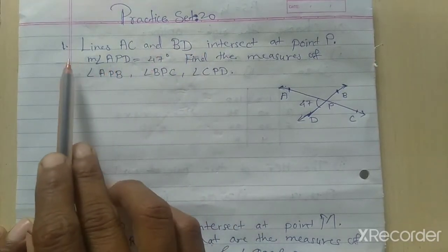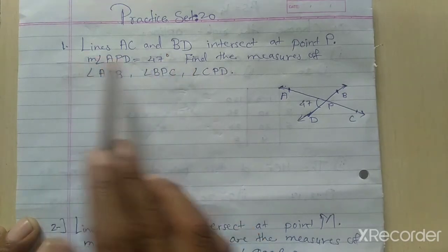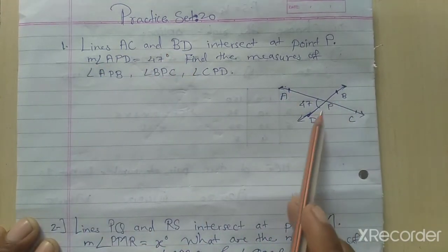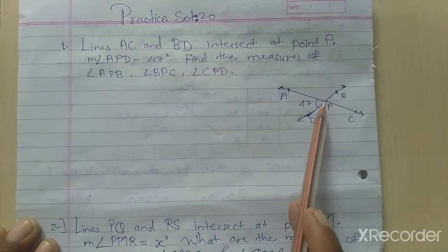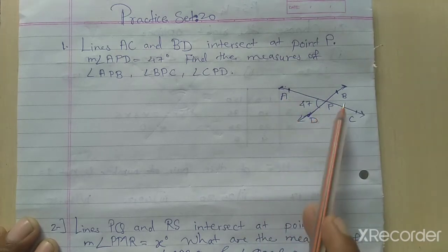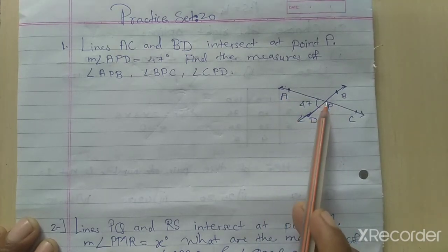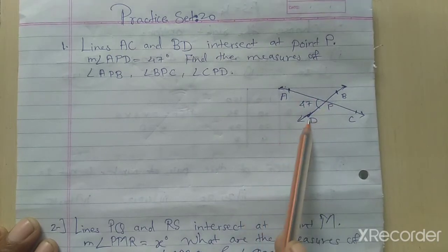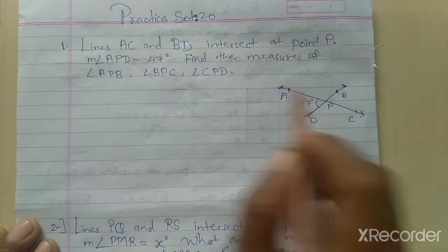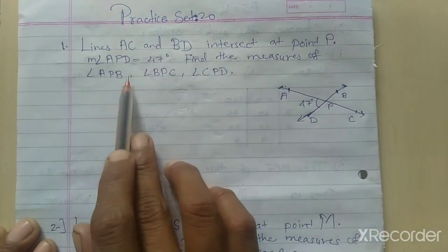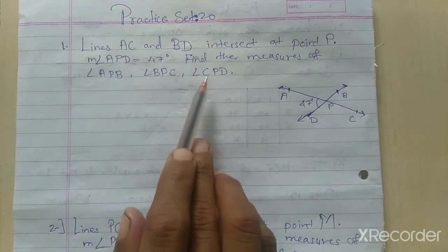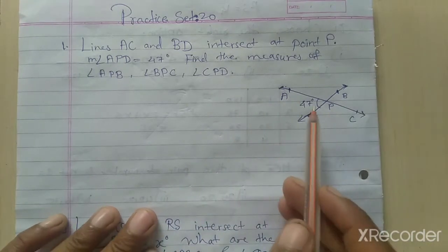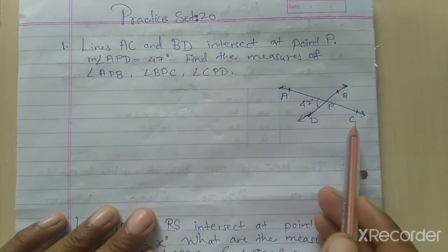Practice set 20. Our first question: lines AC and BD intersect at point P. So two lines, AC and BD, both intersect at point P. The measurement of angle APD is given as 47 degrees.